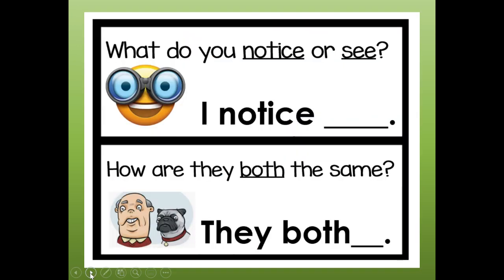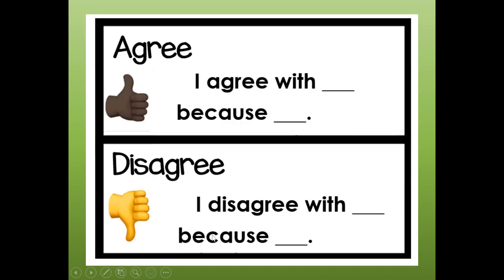For each group of pictures I'm going to ask the same questions: What do you notice or see in the pictures? I notice... And how are they both the same? They both... Just like this man and his dog looks similar — you'd say 'they both' and finish your thought. You can also say whether you agree or disagree with your partner and say why: 'I agree with Mrs. Pearson because...' or 'I disagree because...'